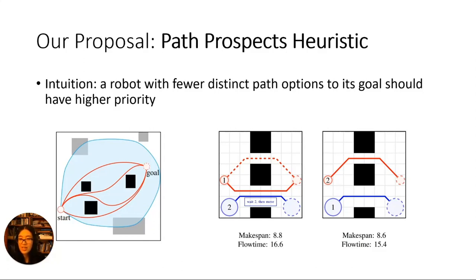On the right is an example. For both possible priority orders, we compute the makespan, which is the maximum of the robots' path times, and the flow time, which is the sum. The larger robot has fewer path prospects since it can't fit through the top corridor.